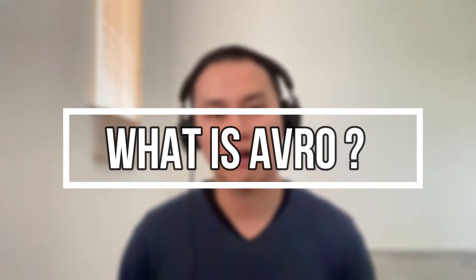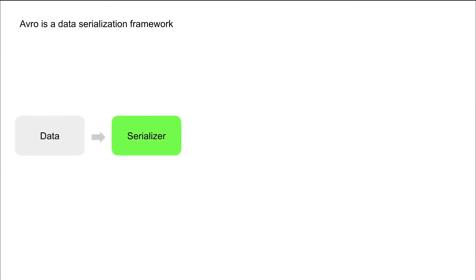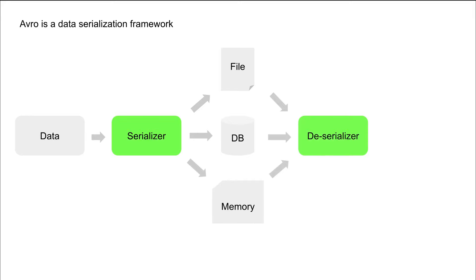What is Avro? Well, Avro is actually not a file format — it's a framework for serializing data. Let's head to the slide to explain what serialization is. Serialization is basically converting data into a binary format that's more machine readable. If we have data, we need a serializer to convert it into another format, written to a database or into memory. And because it's serialized, you can also deserialize it back into its original data format. So Avro itself is not a file format like CSV.